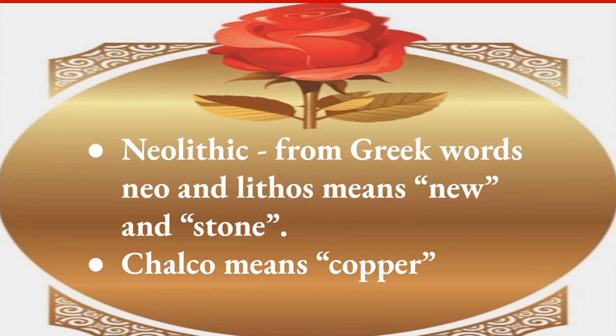Let's look at the meaning of these words. Neolithic contains two Greek words: Neo meaning 'new' and Lithos meaning 'stone' — so Neolithic means new stone. Chalcolithic means copper. I hope your confusion is now solved.